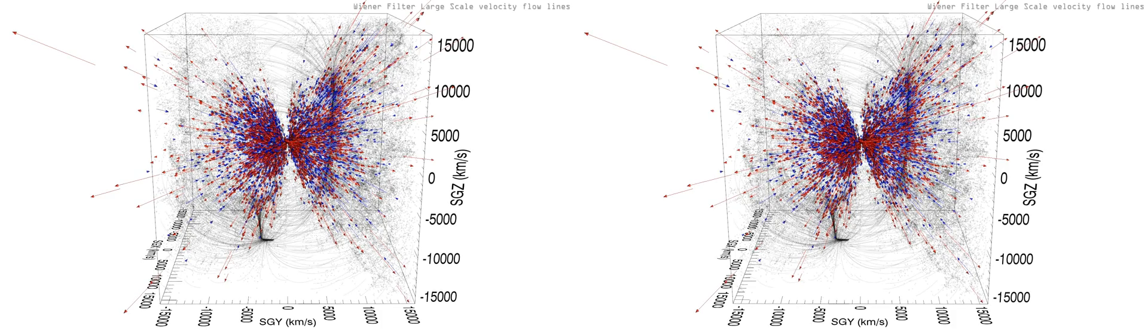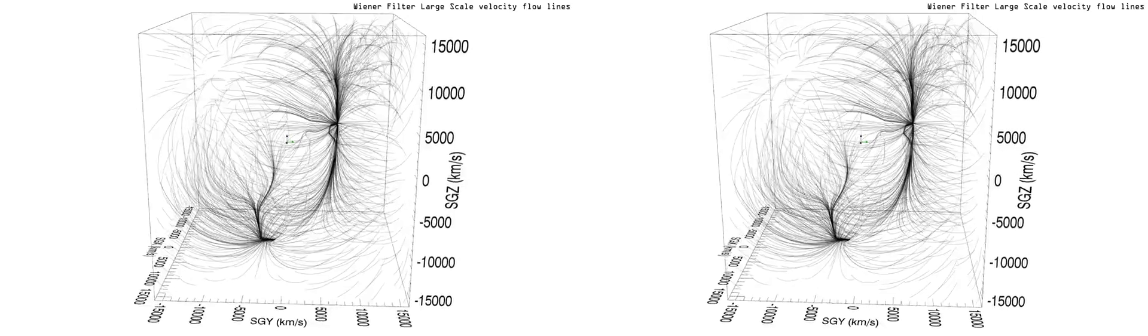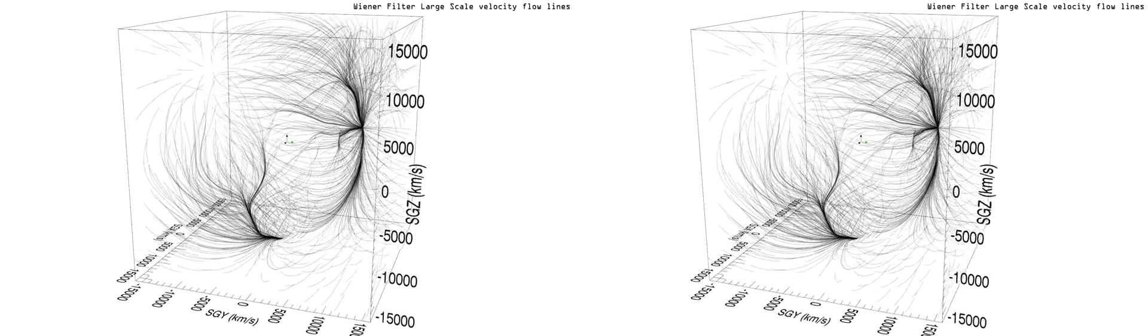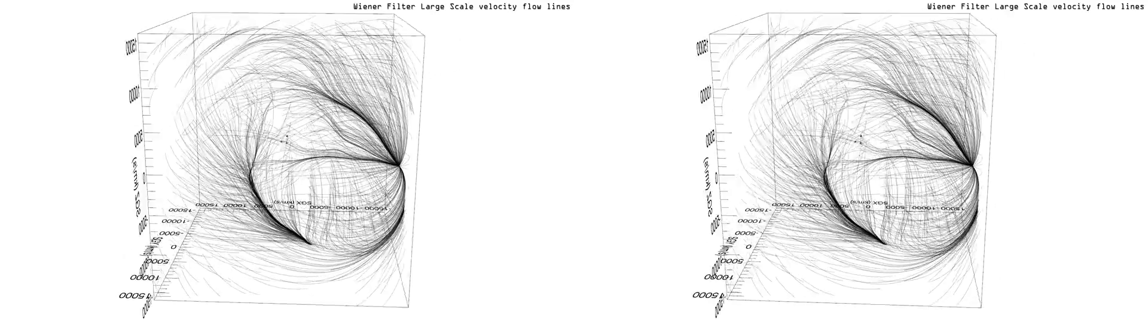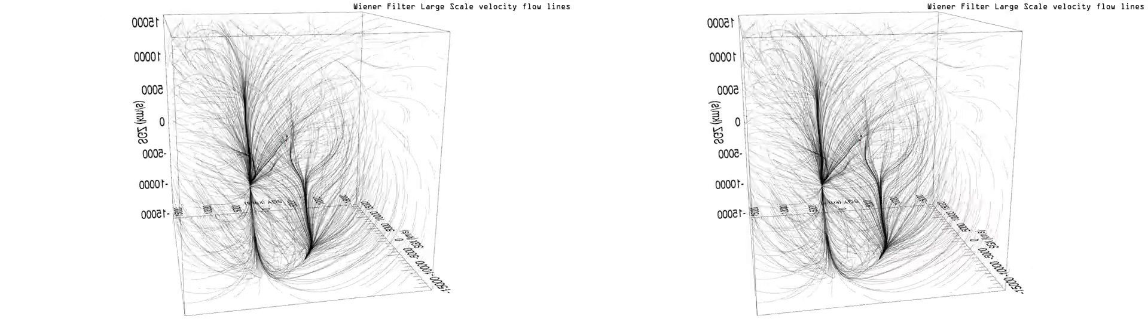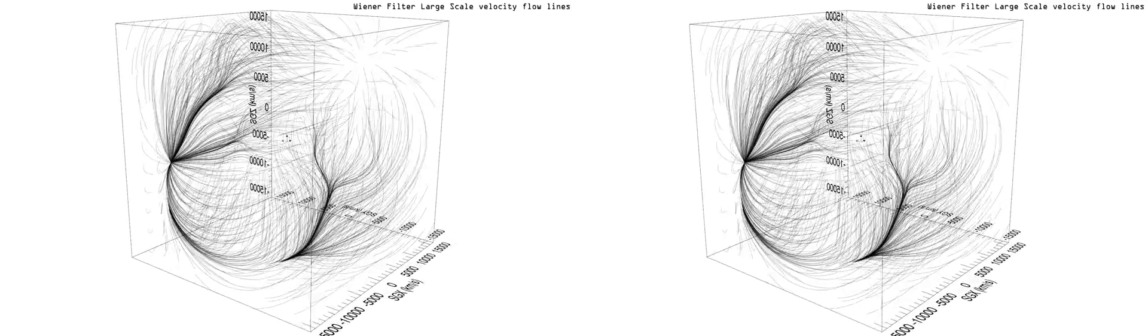The scene now transitions to peculiar velocity flow lines derived from a Wiener filter analysis of the Cosmic flows' two peculiar velocity field. Our galaxy is located at the origin indicated by the three central colored directional vectors.